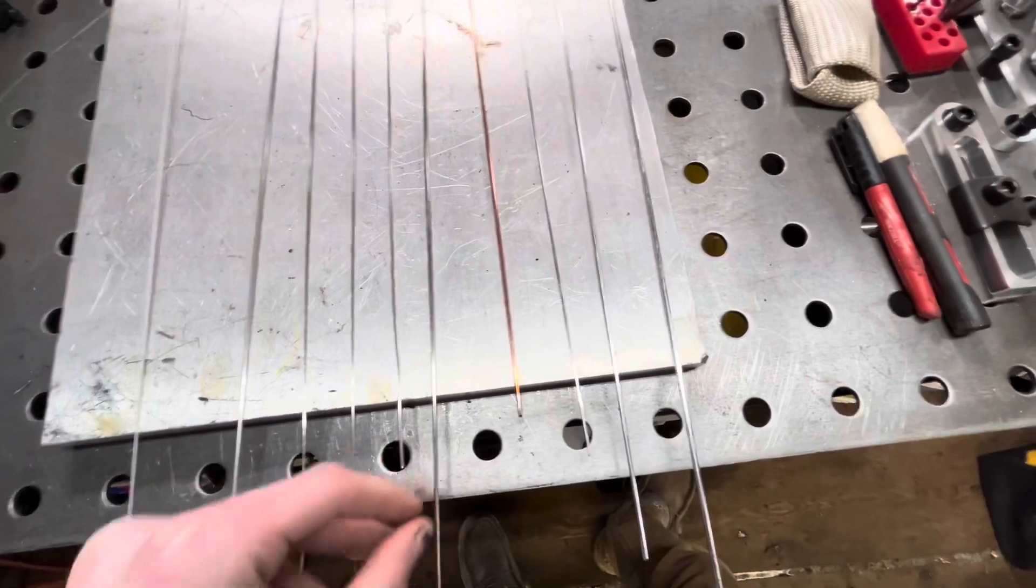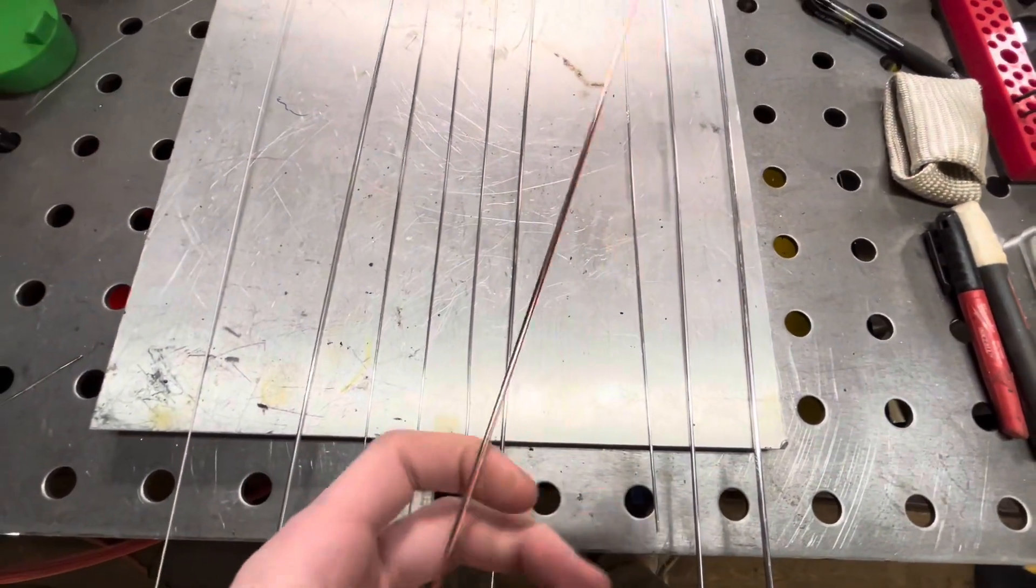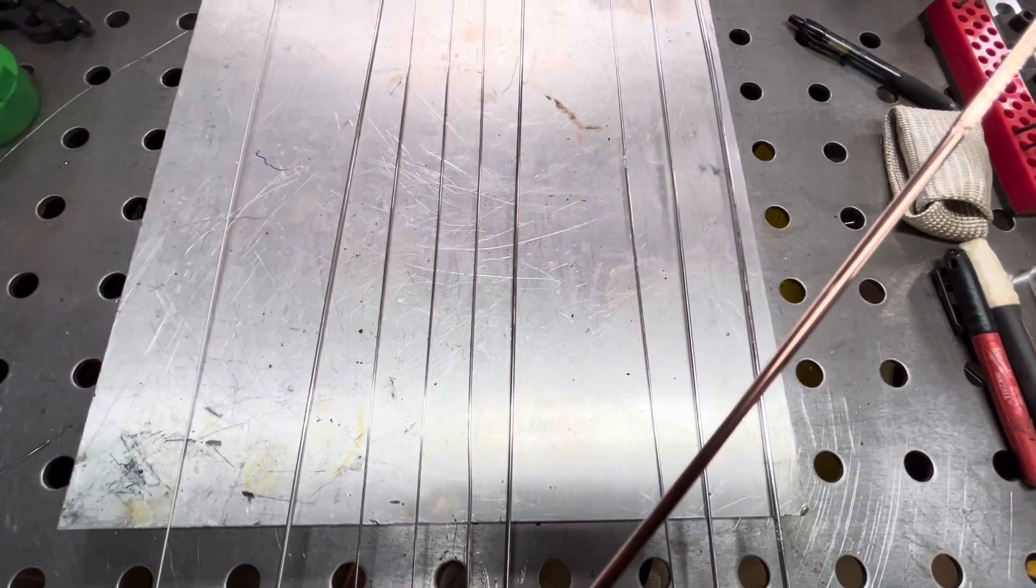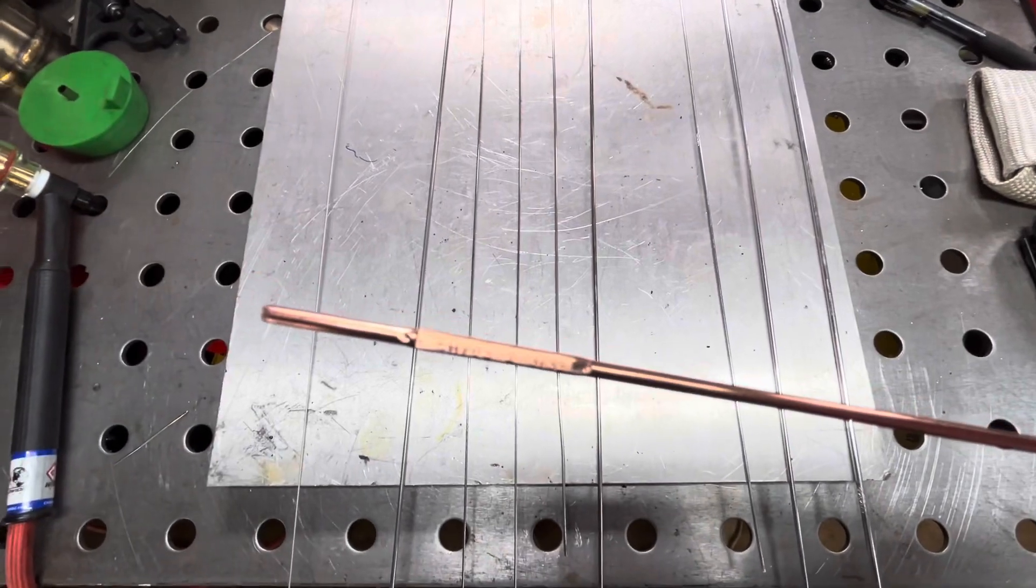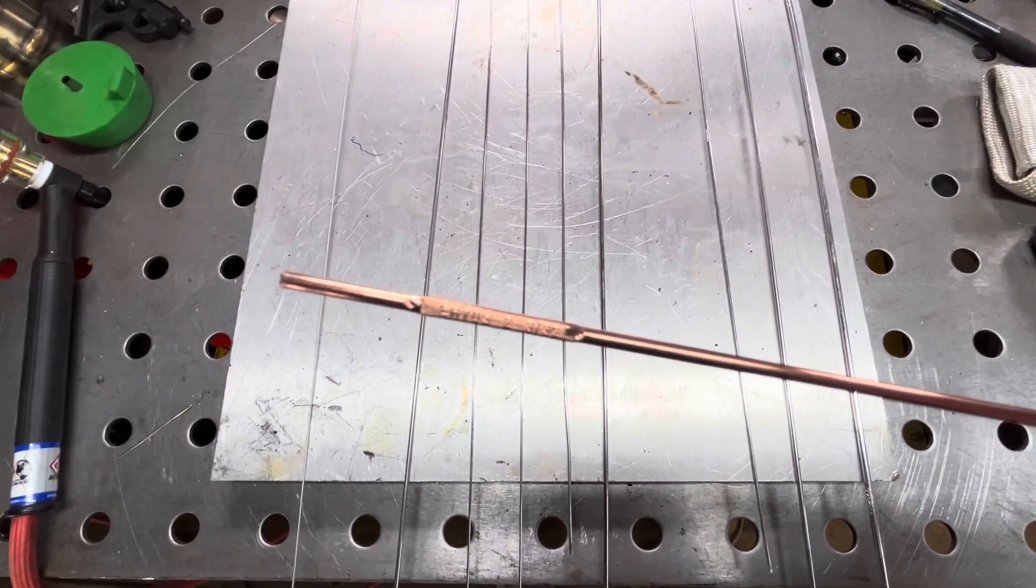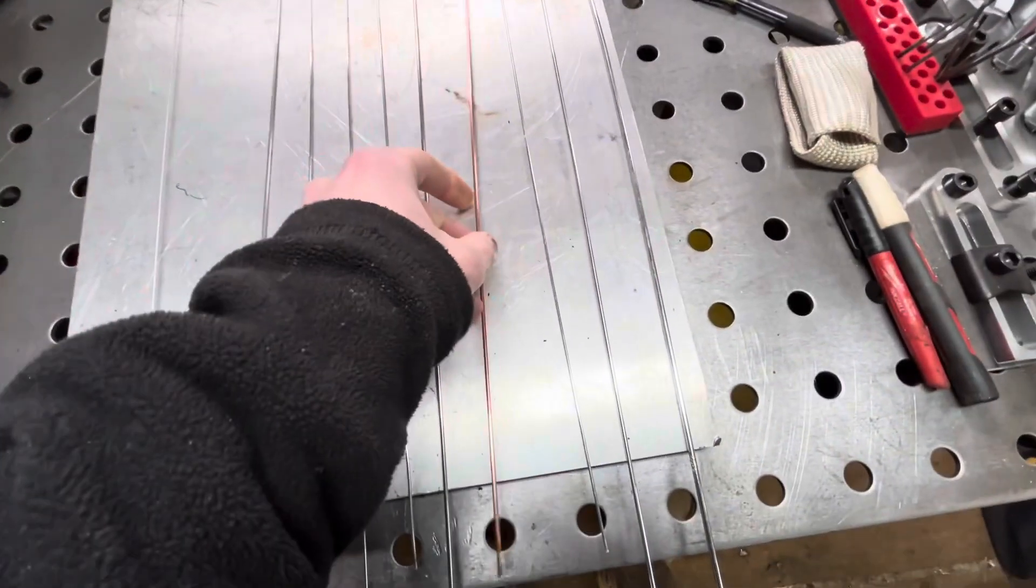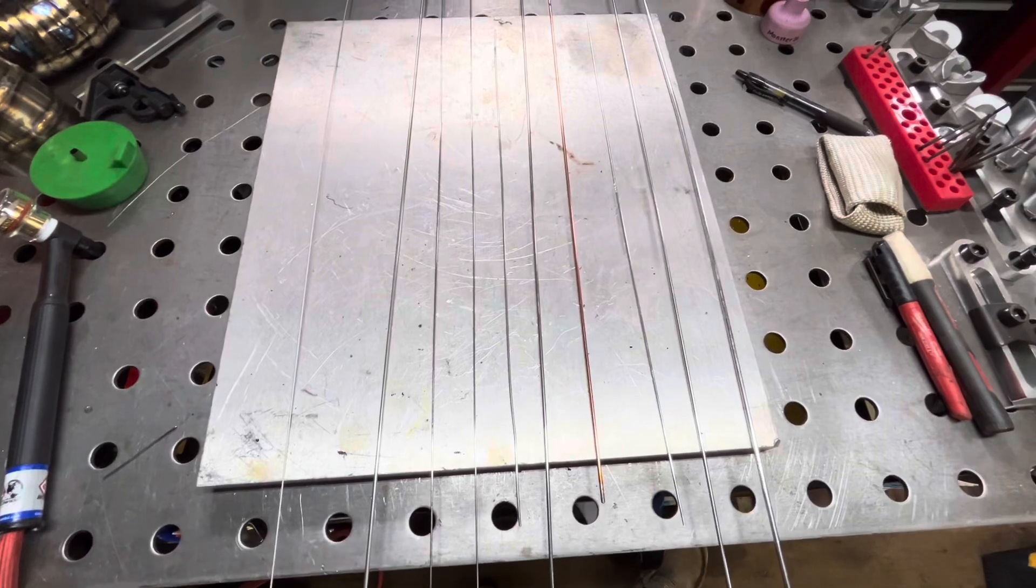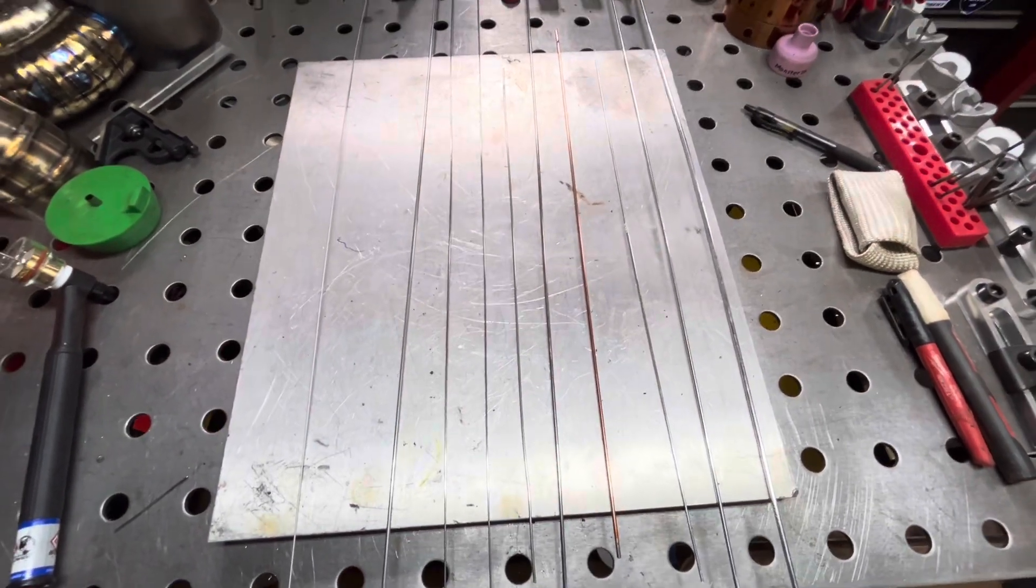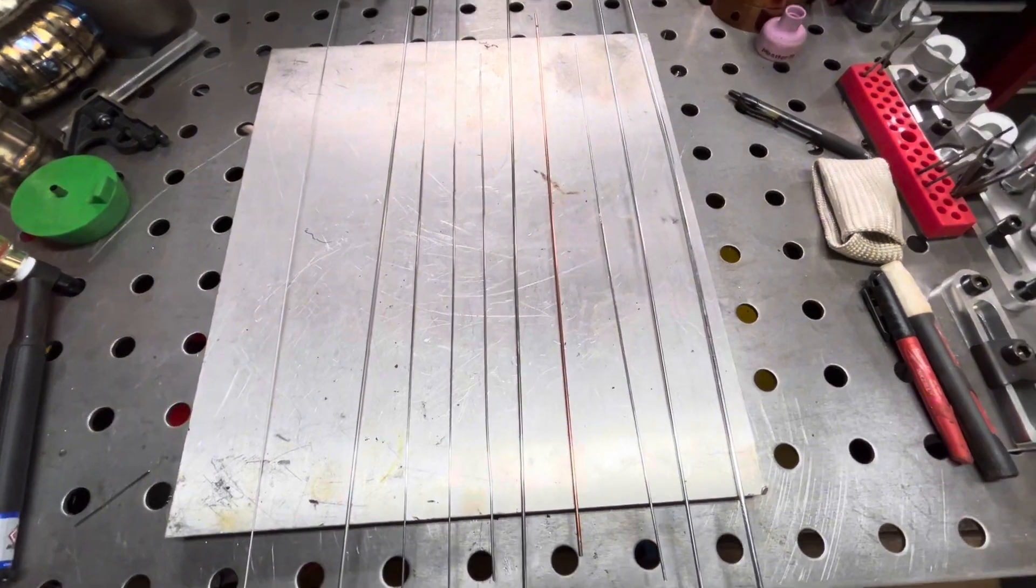Then we move on here. Rod I don't use much, the only copper looking one. This is ER70S2, which is just for welding mild steel. Don't use that often, but when I do need to weld something with mild steel, I think for pretty much everyone ER70S2 is the go-to.